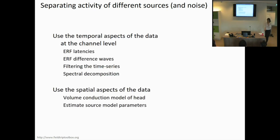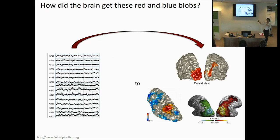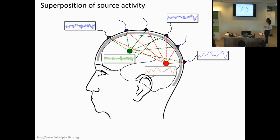When we want to make use of the spatial information in our data, we're going to need a forward model. For this, we usually compute a volume conduction model of our head, and then we estimate the source model parameters. Or to put it more simply, we want to go from these wiggly lines that we see in our electrophysiological recordings to these beautiful blobs that you want to have in your paper.